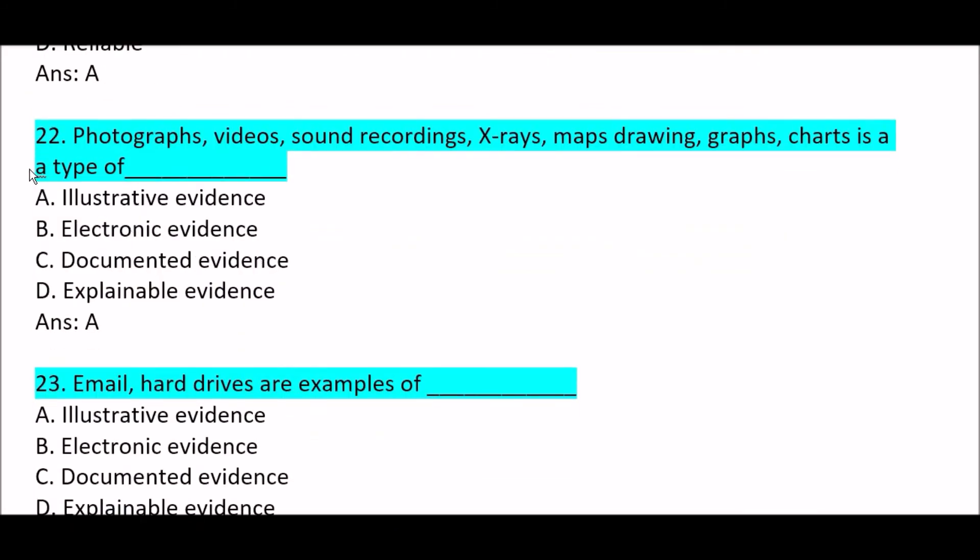Next question: photographs, videos, sound recordings, x-rays, maps, drawings, graphs, and charts are a type of — correct answer is Option A — illustrative evidence. Photographs, videos, sound recordings, x-rays, maps, drawings, graphs, and charts are all types of illustrative evidence.